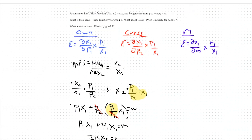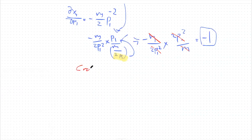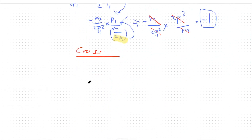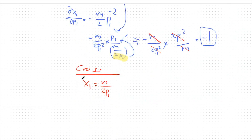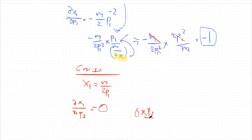Now let's look at cross-price elasticity. Writing our demand function again: x1 = m/(2*P1). Notice right away that there is no P2 in this demand function. If P2 is not a variable in the demand function, then the derivative of x1 with respect to P2 is just zero. So we have zero times P2 over x1, which is still zero. Our cross-price elasticity is simply zero — there's no change given a change in the price of good two.